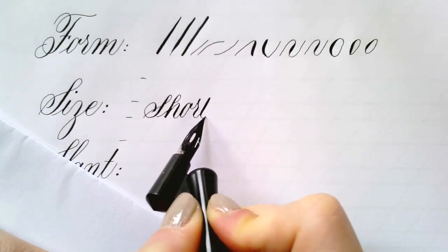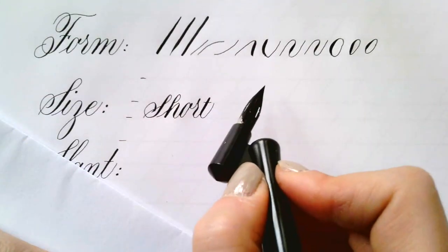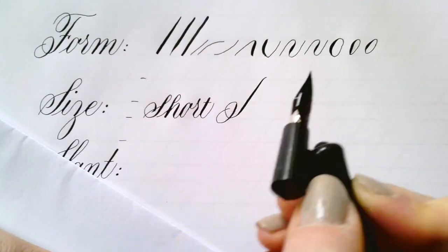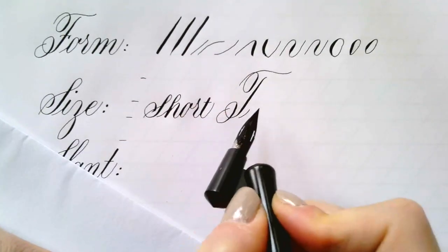If you shorten the ascenders or descenders, there may be some ambiguities, like h's and n's start looking alike or d's and a's start looking alike, especially if you're writing them a lot shorter.